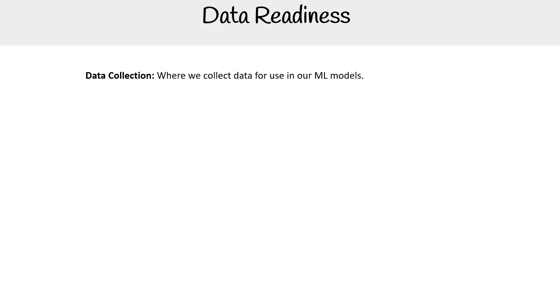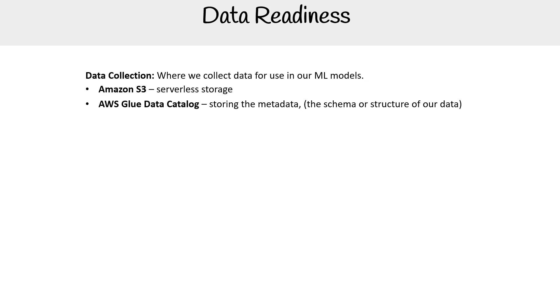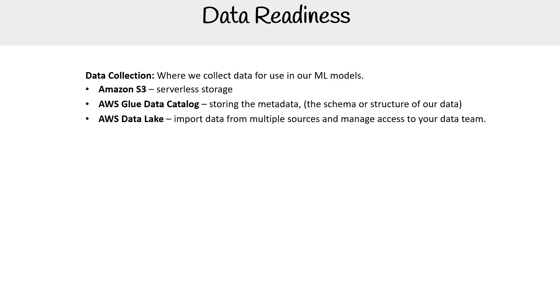Let's talk about data readiness and identify what kind of services could be used at this stage of the ML pipeline. First, we want to talk about data collection. S3 is a great place to store data for ML models. AWS Glue Data Catalog is great for storing metadata — not the data itself, but the schema or structure around the data. Then you have AWS Lake Formation, which is useful for importing data from multiple sources and managing access to your data team.